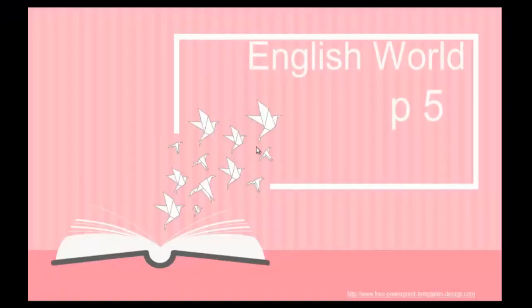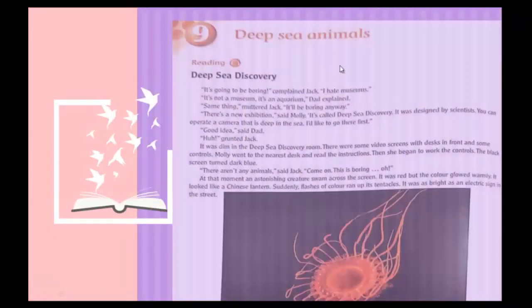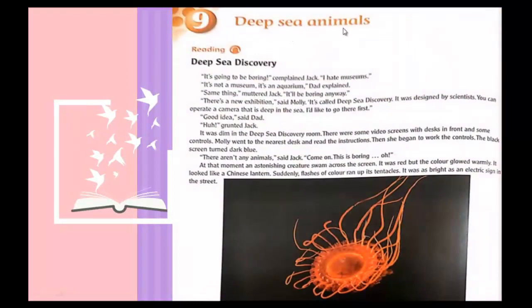Hi guys, this is Miss Inez from our school. Our unit today is Unit 9 from English World. Its title is 'Deep Sea Animals.' This reading lesson is about the aquarium — a place where you can see many sea animals. Here, a family went to the aquarium to see some strange sea creatures and how they move and flap in water.